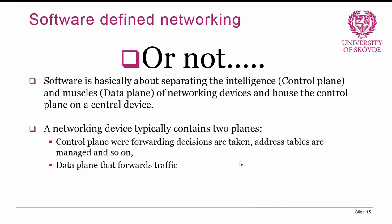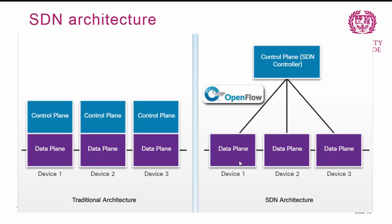Software-defined networking is basically about separating the intelligence and the muscles of networking devices. Networking devices can be divided into a control plane, where forwarding decisions are taken and address tables are managed, and a data plane, which is used to forward traffic. In the traditional architecture, every device has both a data plane and a control plane. Using the SDN architecture, we abstract the control plane of each device and put it on a controller — we do all the heavy calculations from one device, and let the networking devices do what they do best: shuffle traffic.